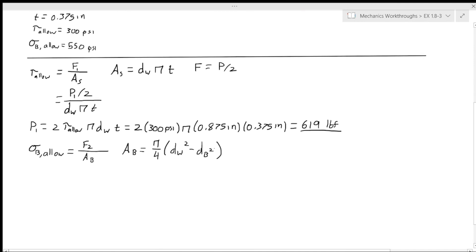And again, f equals p over 2. So substitute this in and call this p2, which is our second allowable force that we're trying to find. This is over pi*(dw^2 - db^2)/4. We're trying to find p2 this time, so we rearrange.